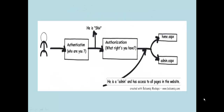Whenever you implement .NET Security — whatever methodology you wish, Forms Authentication, Windows Authentication, Passport Authentication, Custom Authentication, whatever it is — there are two important steps that need to be executed to ensure that your .NET Security works properly. The first step is to go and check in the database if this user exists in your tables and if he is a valid user.